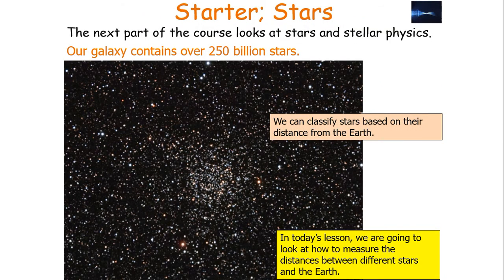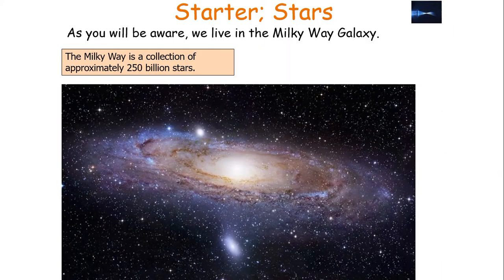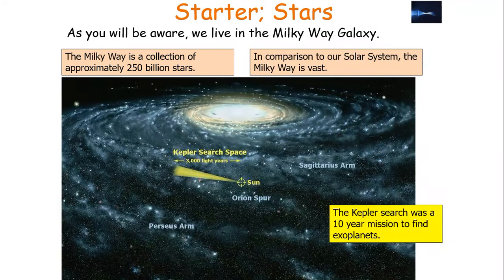The next part of this course is going to look at stars and stellar physics. Our galaxy, we think, may contain over 250 billion stars, and we can classify stars based on their distance from the Earth. In today's lesson, we're going to look at how we can measure the distances between different stars and the Earth. We live in the Milky Way galaxy, which is a collection of approximately 250 billion stars.